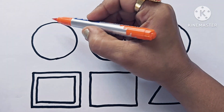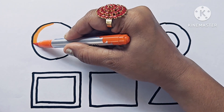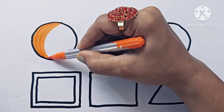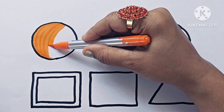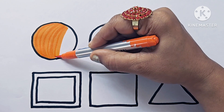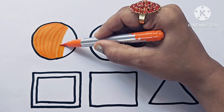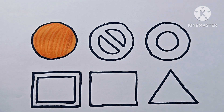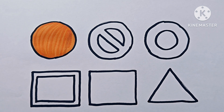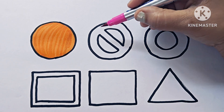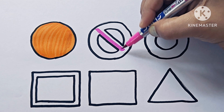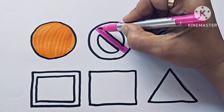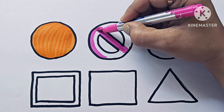Now let us color the shapes. This is a circle and the color is orange. Circle has no sides — it is made of a curve, its surface is curve. Pink color — this is a not-allowed symbol.